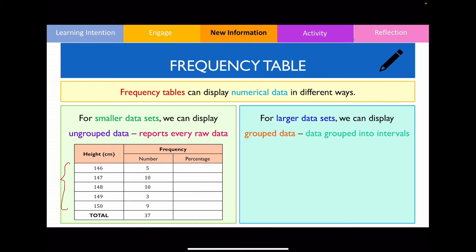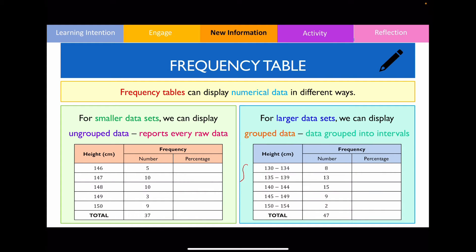An example of this is shown below. By chunking the data set into smaller groups, it allows us to make sense of the data much more easily, and it also makes the frequency table shorter and more condensed. This looks a lot neater as opposed to listing all heights from 130 to 154 centimeters in a much longer table. Let's now look at an example of how we can create a frequency table for ungrouped data.